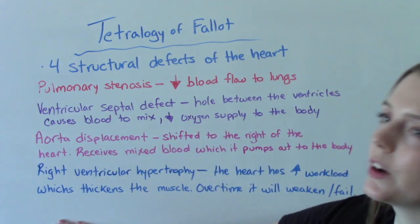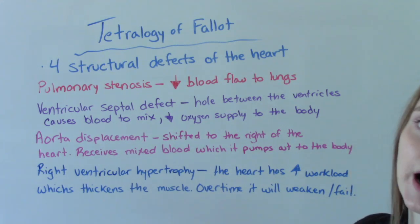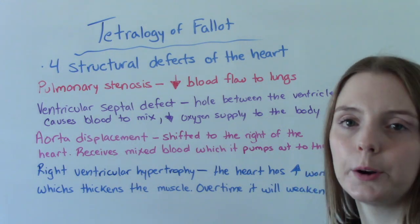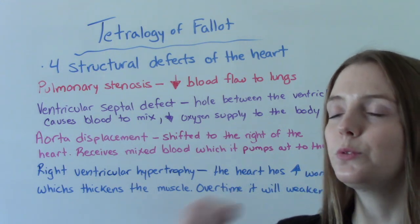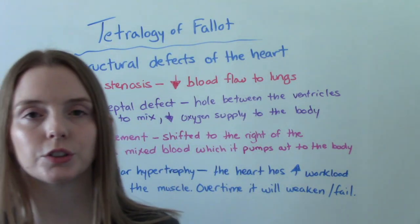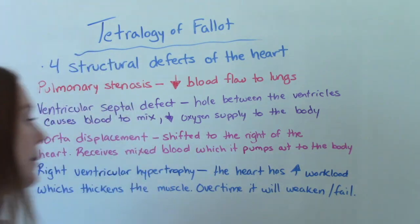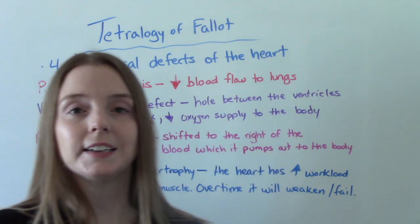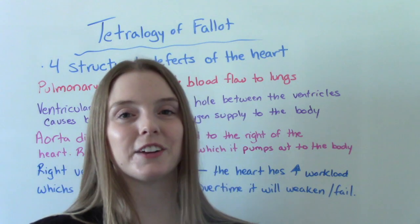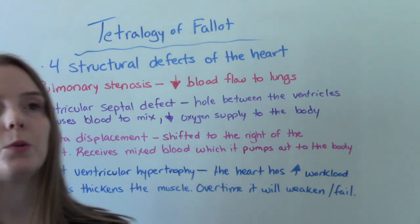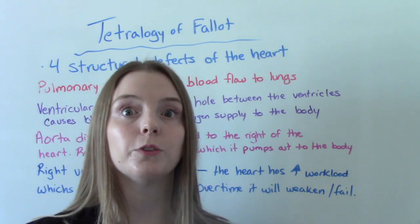The fourth structural defect is right ventricular hypertrophy. This happens when the heart is working too hard with a really high workload, really working to pump out that blood. What happens is the muscle in the ventricle starts to thicken — it starts to get bigger, hypertrophy means get bigger. So the heart has increased workload which thickens the muscle. That's okay temporarily, it's a temporary fix, but we can't live like that. It won't work over time, and eventually the heart will become weaker and will fail.